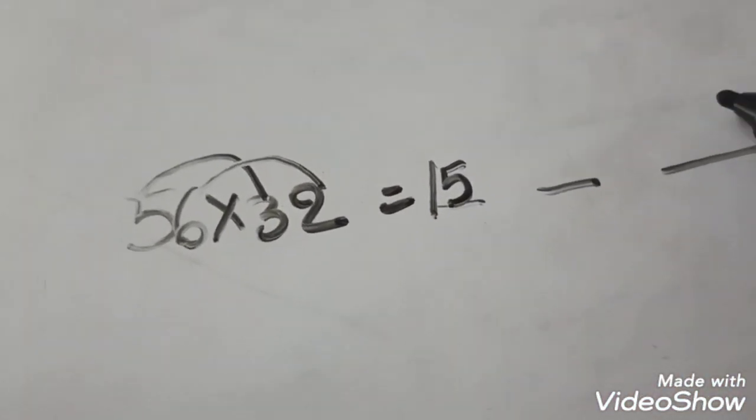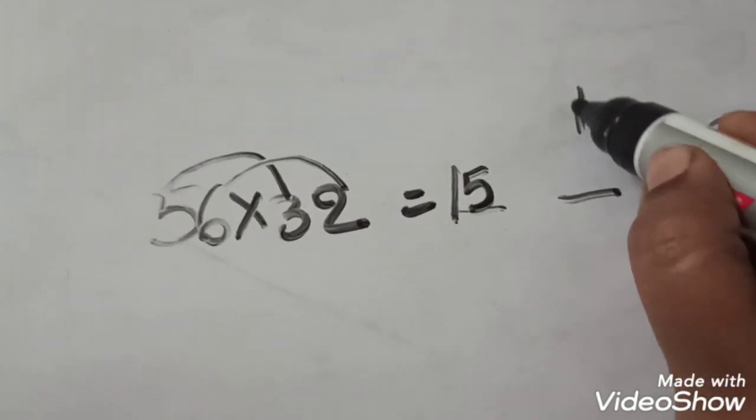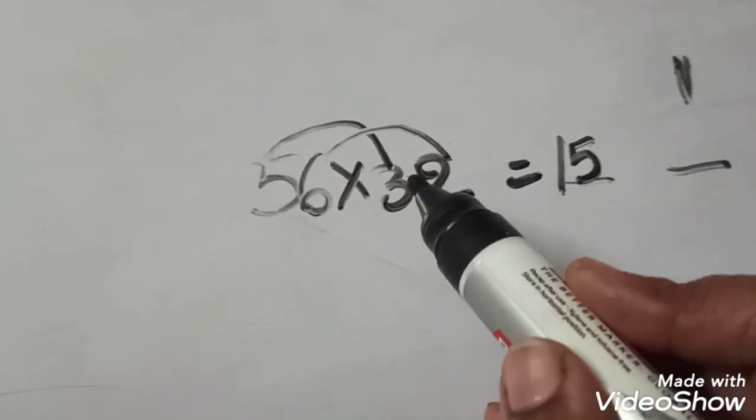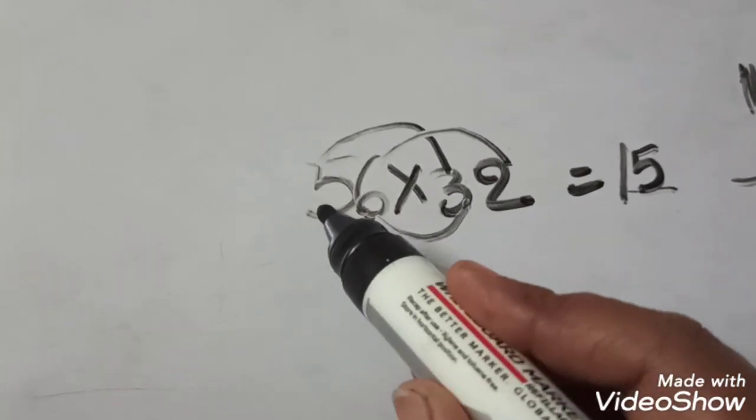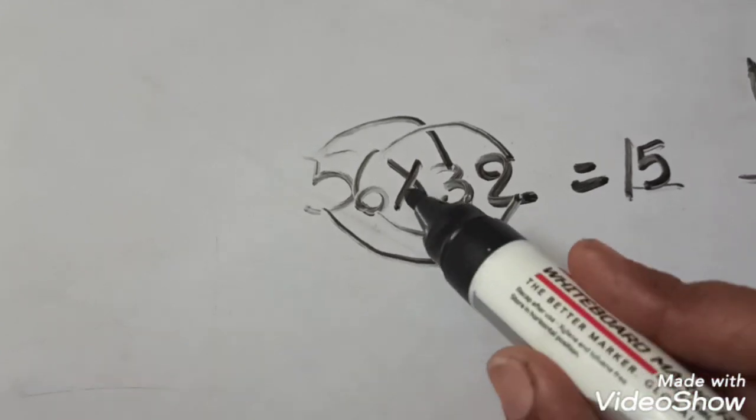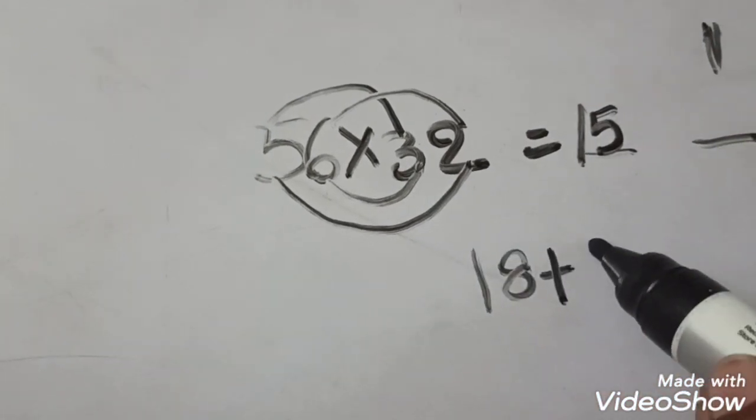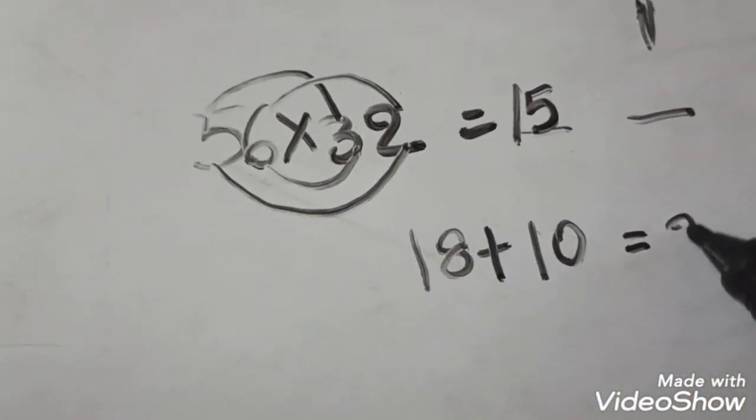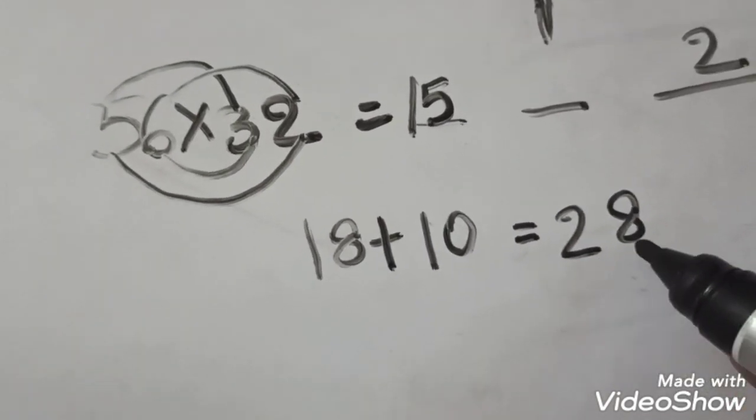We should not write 12 here. Write 2 and 1 as a reminder in the next place. Next step, these two and these two we should multiply and add these numbers. Six threes are 18 plus five twos are 10. 18 plus 10 is 28. Here also we got a two-digit number.